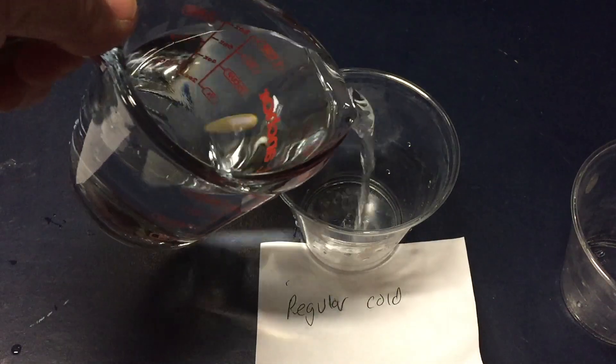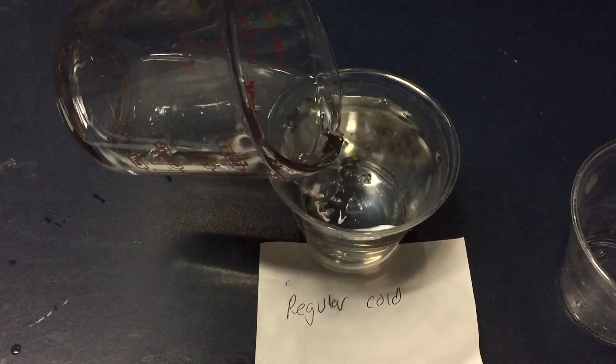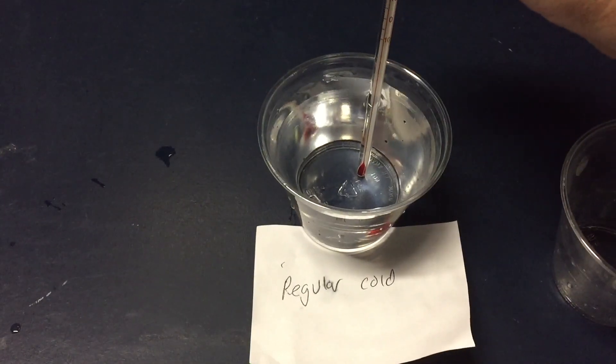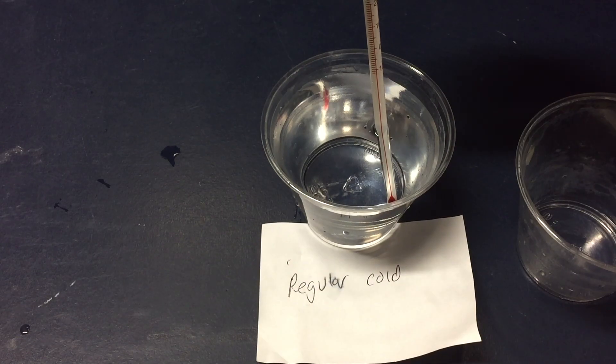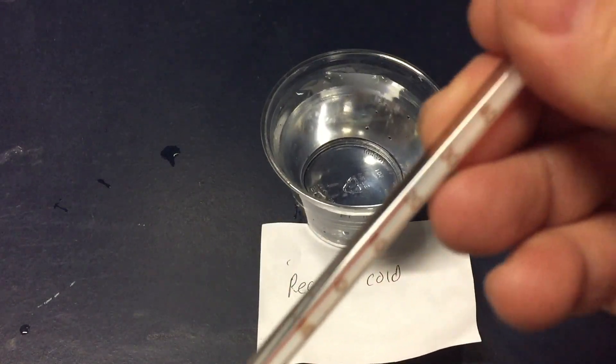So to set up this experiment, I'm going to use two different kinds of water, regular water and distilled water. I'm going to put the same amount of water in each one and I'm going to take the temperatures of each of those so we have a starting base, and then I'm going to record the temperatures as we go forward to see how that affects the water.